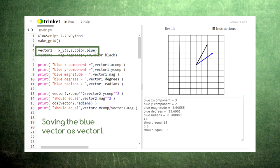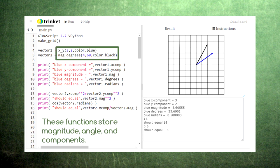When you use one of these functions to create a vector, you can store that vector under a name. For example, here we store the first vector under the name vector1 and store the second vector under the name vector2. When the code creates these vectors, it also stores the magnitude, angle, x component, and y component of each vector.